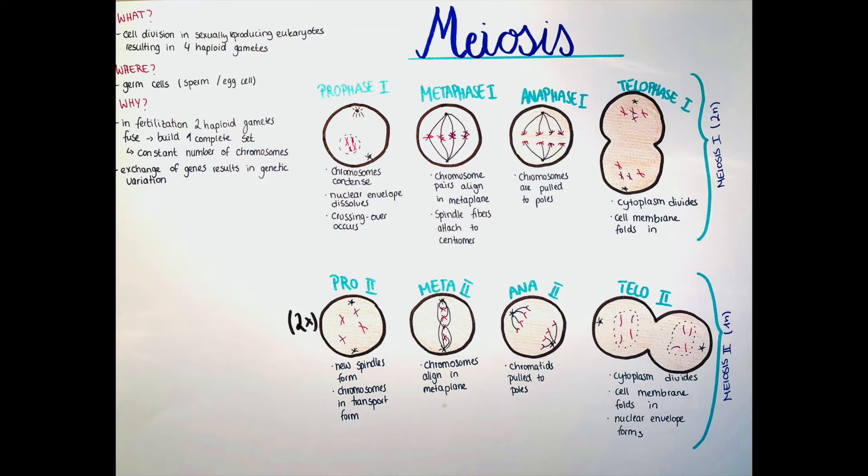Also here, an interchromosomal recombination happens. So the chromosomes are aligned, and then either the chromosome from the father or the chromosome from the mother will be attached to a spindle fiber which then drags it to a pole. So here the spindle fibers kind of determine whether the chromosome from the father or the chromosome from the mother will be put into the new cell.